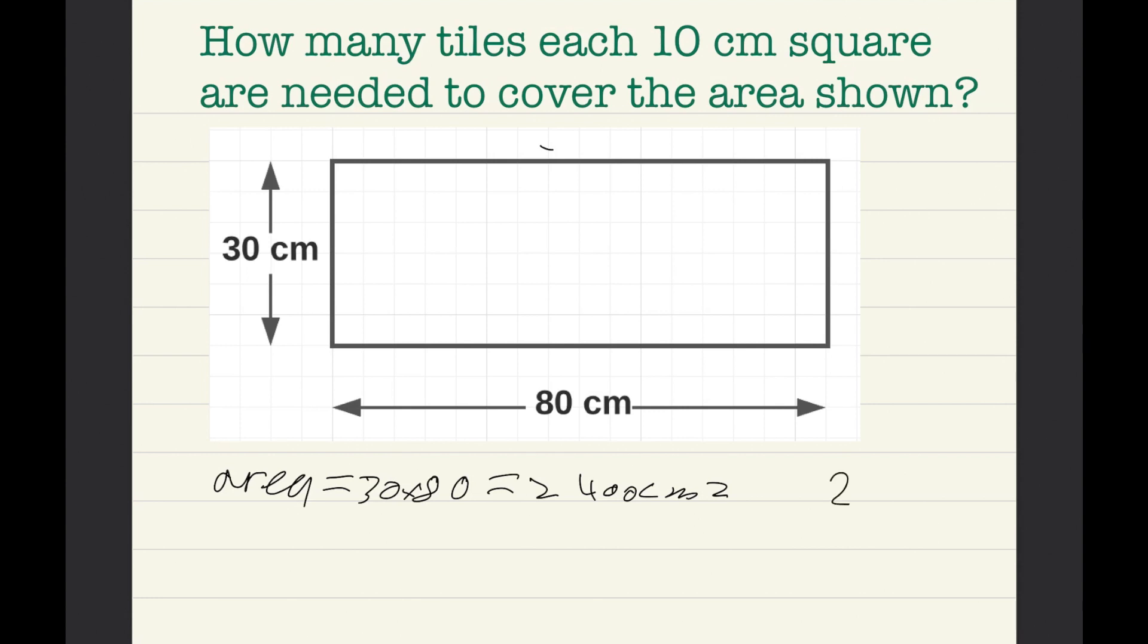We need to do 2400cm squared divided by 10cm squared which equals 240.